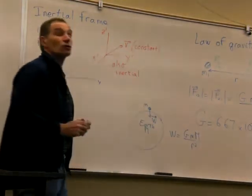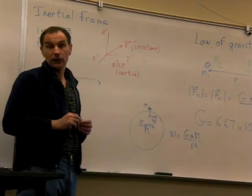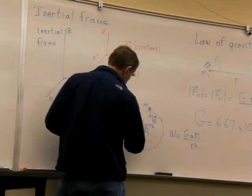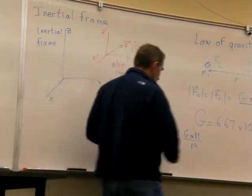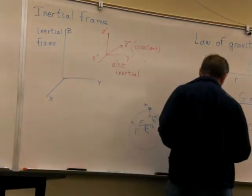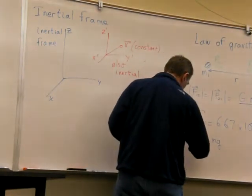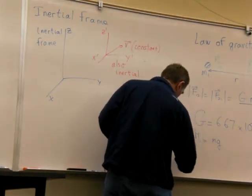But m is so close to the surface of the Earth that r squared is going to be the radius of the Earth. So, we can just say this is mg by saying that all of that is a constant equal to g.